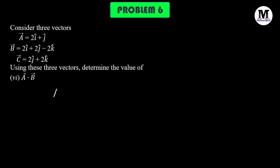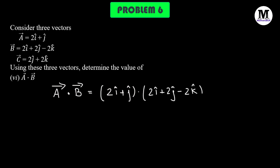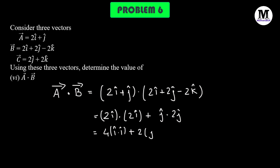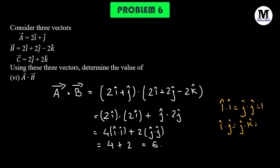Problem number 6: we need to find out the scalar product of A and B. A vector dot B vector will be 2i cap plus j cap dotted with 2i cap plus 2j cap minus 2k cap. We simply take each component of i cap, j cap, and k cap and multiply them with each other. So 2 times 2 is 4 multiplied by i cap dot i cap, plus 1 times 2 is 2 multiplied by j cap dot j cap. This gives us simply 4 plus 2 equals 6. We have used the fact that a unit vector dotted with itself is 1, and i cap dotted with j cap gives 0.